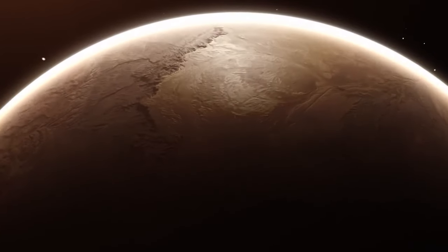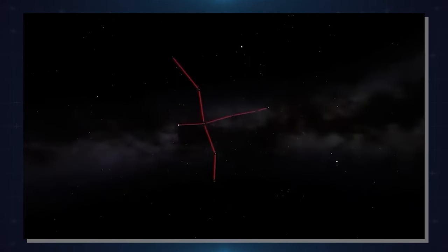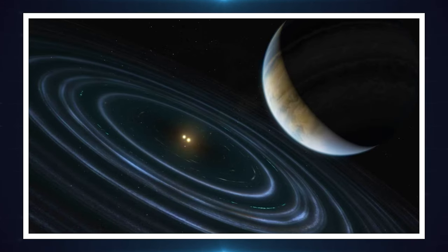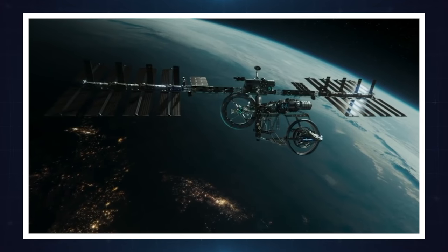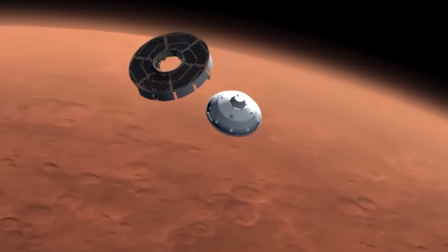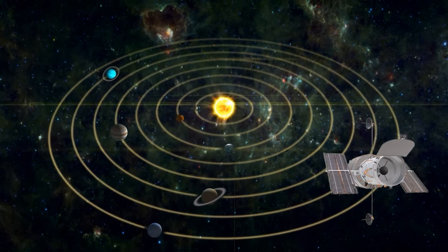An exoplanet is a planet that doesn't orbit our Sun. Instead, most of them orbit other stars, while some wander alone in the space between stars. These exoplanets are incredibly far away, too distant for us to send space probes to explore them directly. However, we study them using telescopes on Earth and in space, which can observe these distant planets from our solar system.